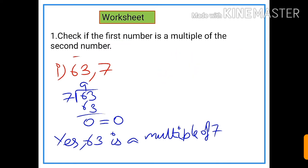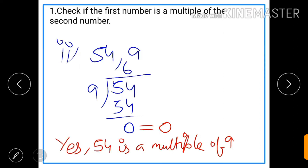So here 7 is a factor of 63 and 63 is the multiple of 7. So you will write: yes, 63 is a multiple of 7.